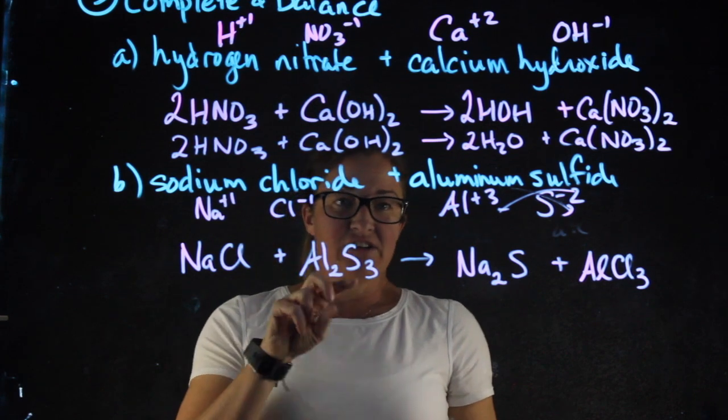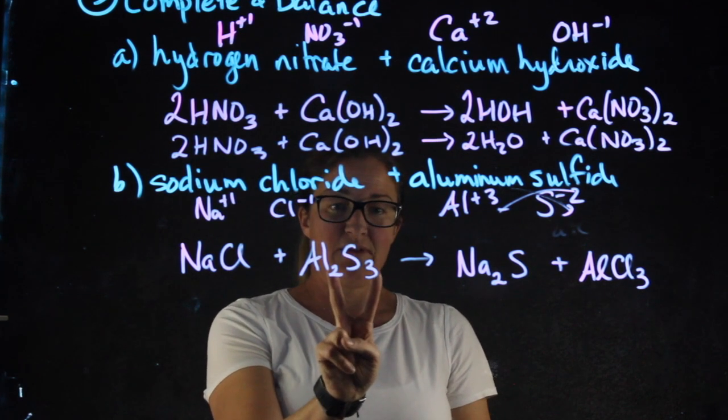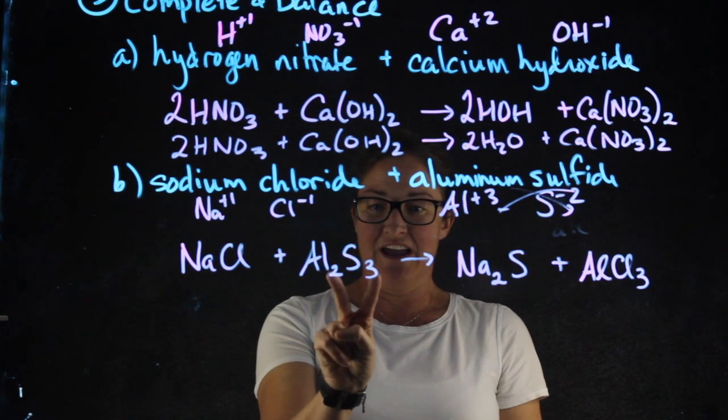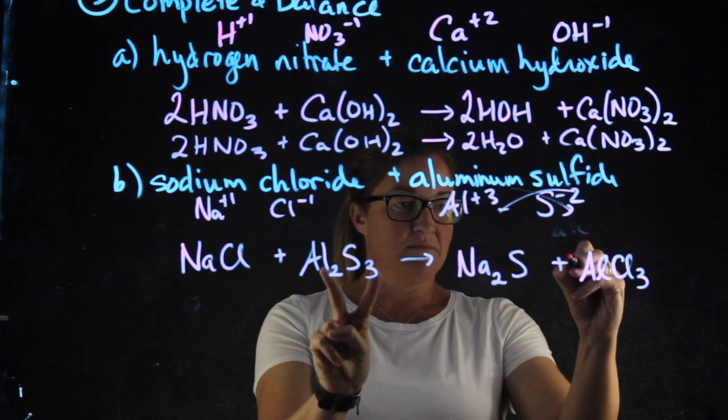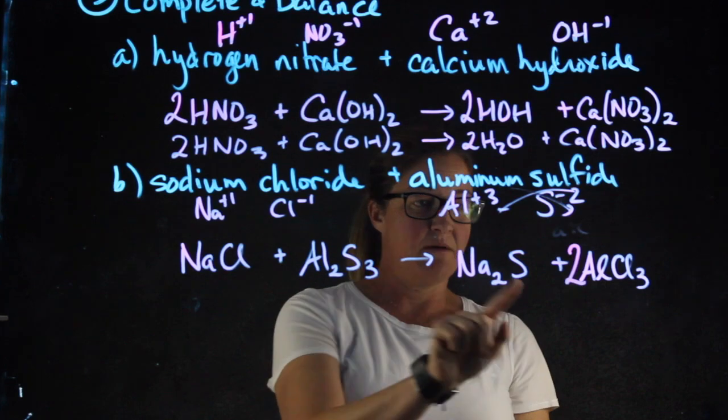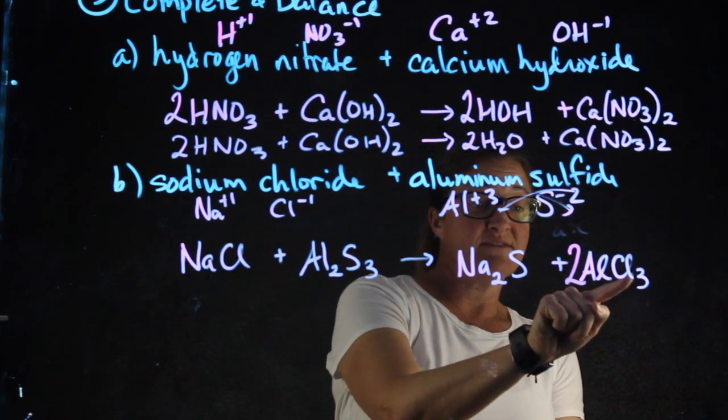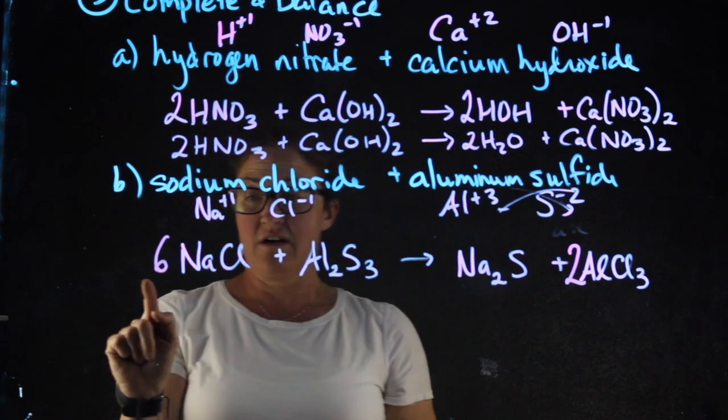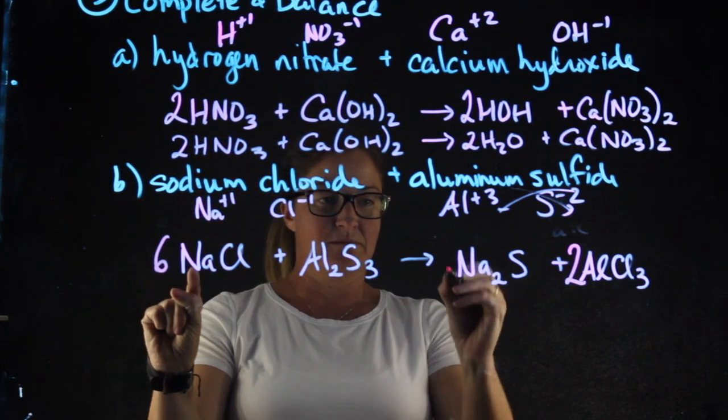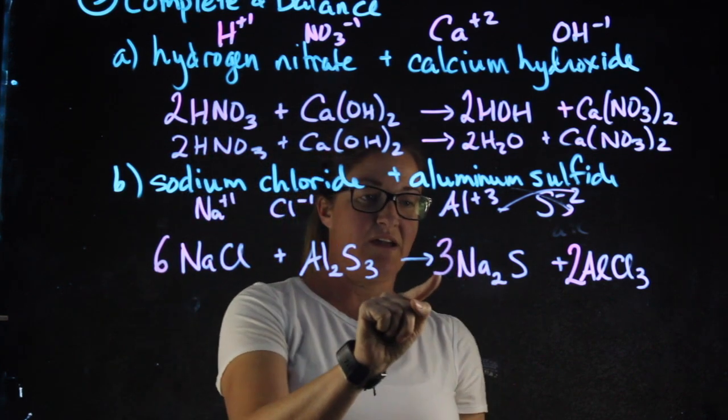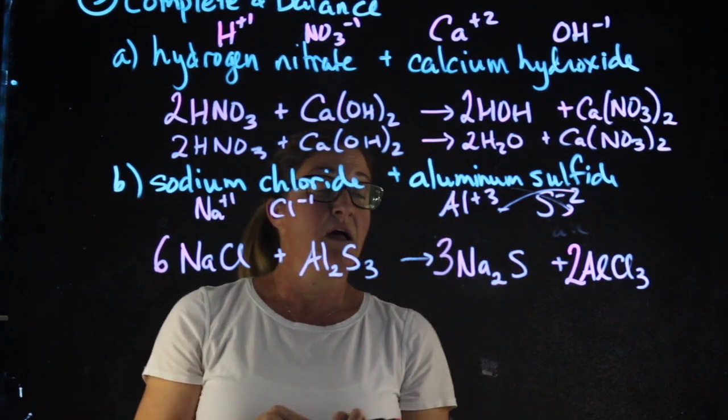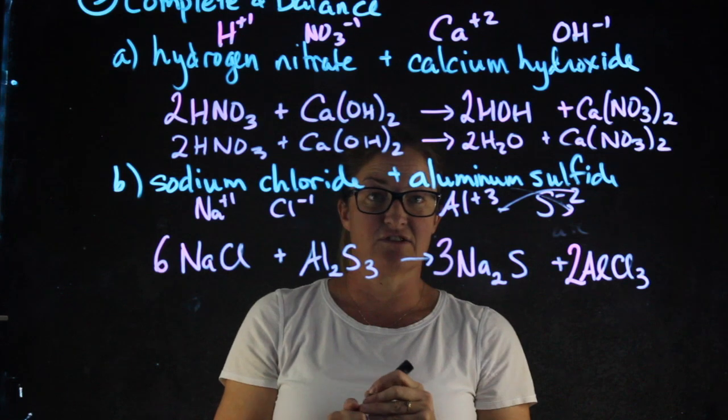I find when balancing a reaction like this, it's easiest if I start with the one with the biggest subscripts. So Al2S3 has the most going on here. So with two aluminums, I get a two there. Now that gives me six chlorines on the right, so I'm going to put a six over here. I now have six sodiums. Putting a three here gives me six sodiums, three sulfurs, three sulfurs, back to where we started and everything is good.